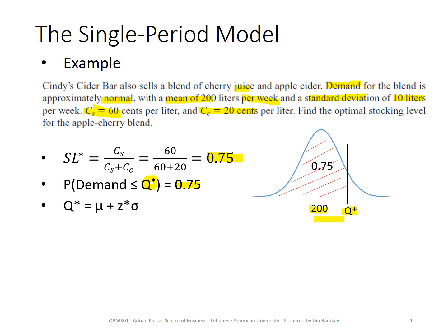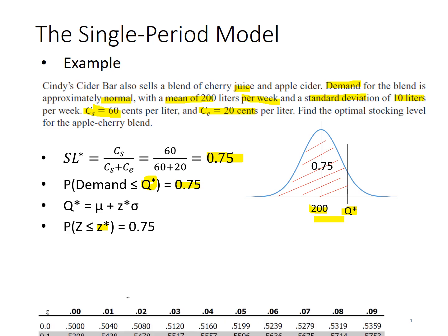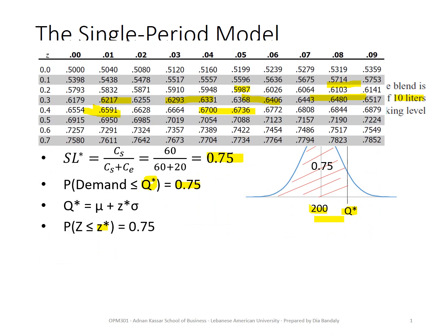So what is Z*? We get it from the Z-table such that P(Z ≤ Z*) = 0.75. Let me show you an extract of the Z-table.